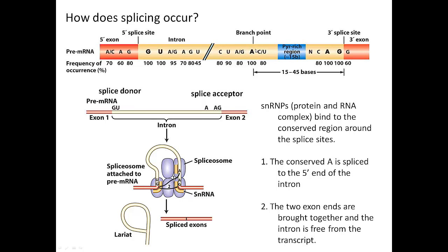There are other bases that are preferred — for example, the third position in an intron is preferred to be either an A or a G, and 95% of the time you'll see one of those bases. Focusing on the absolutely required bases: the beginning of the intron, the end of the intron, and the branch point A are all absolutely required.